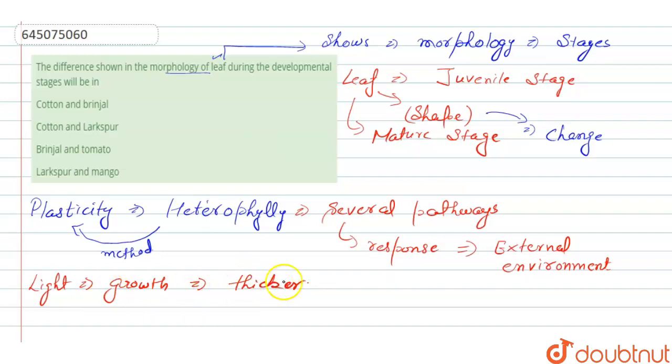We can take examples of plants that show morphology of leaf during developmental stages, such as cotton, larkspur, buttercup, and coriander.